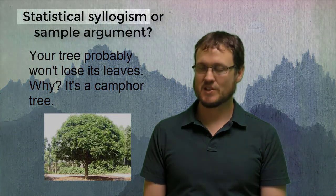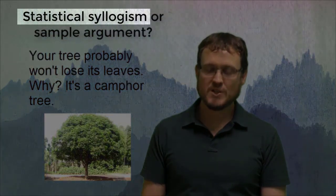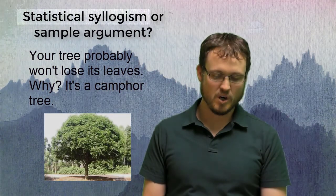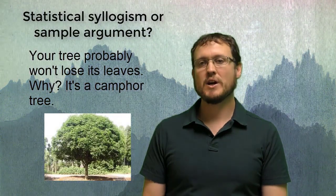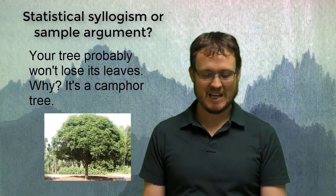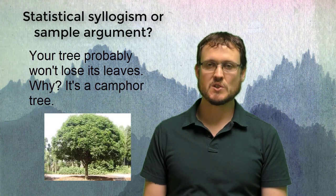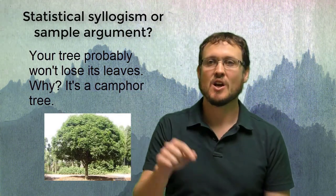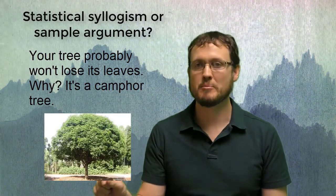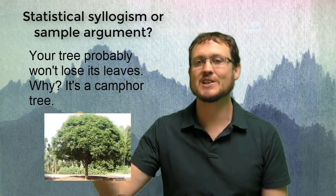This is a statistical syllogism, and the reason is, consider the direction of the logic. What is the conclusion? What is the premise? Well, they come out right away with a conclusion. They say, your tree probably won't lose its leaves. Why? What is the evidence that this thing is the case? The evidence would be the premise. So the thing they say next, why? It's a camphor tree. That's why.